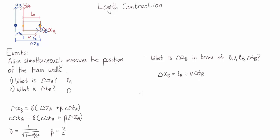So then the delta xb, the separation between the two events, is the length of the train in Bob's frame plus the distance the train moves in this time.